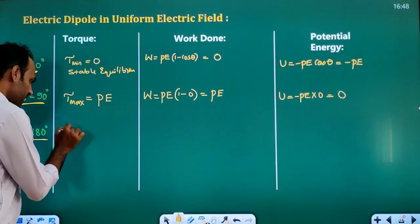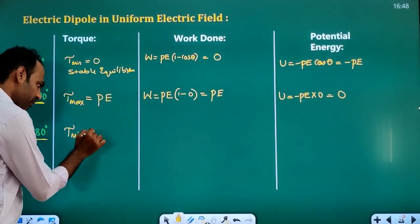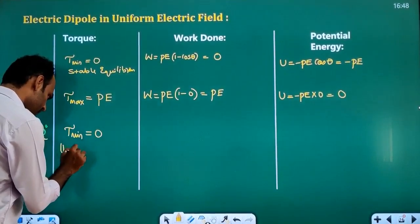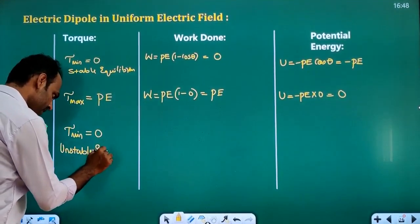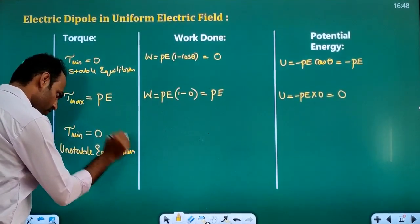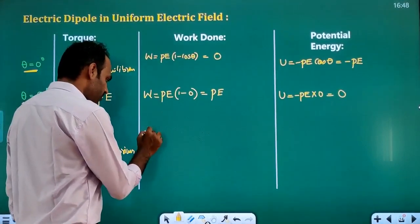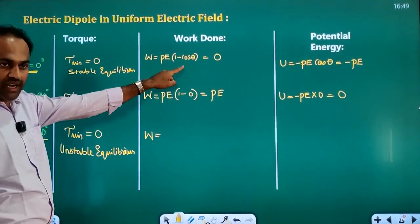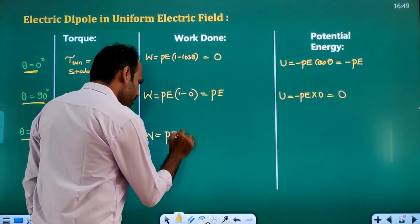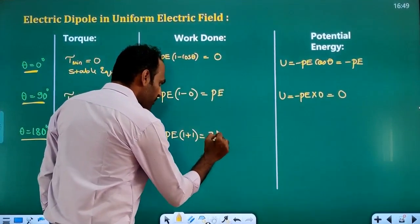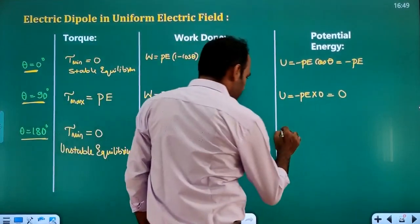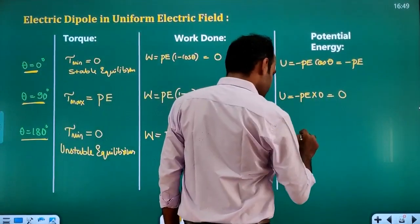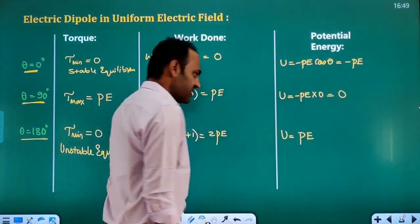At theta = 180 degrees: torque is minimum (equal to 0), but here it is in unstable equilibrium — unlike theta = 0 which is stable equilibrium. Work done = PE(1 minus cos 180) = PE(1 minus (minus 1)) = PE times 2 = 2PE. Potential energy = minus PE cos 180 = minus PE times (minus 1) = plus PE.